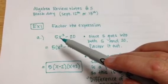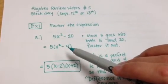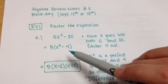Now, when I do that, 5 divided by 5 is 1, 20 divided by 5 is negative 4, so that's where I get 5 times x squared minus 4.